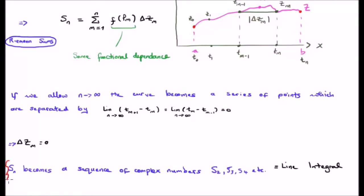This means that our sum s sub n becomes a sequence of complex numbers. And this is what our line integral is. So, we go from a discrete sum to a continuous integral.